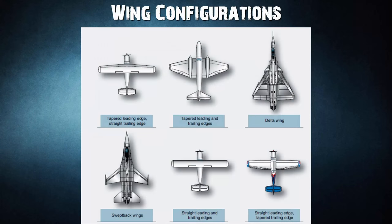Wings and Wing Configurations. Wings are airfoils that, when moved rapidly through the air, create lift. They are built in many shapes and sizes. Wing design can vary to provide certain desirable flight characteristics. Control at various operating speeds, the amount of lift generated, balance, and stability all change as the shape of the wing is altered.